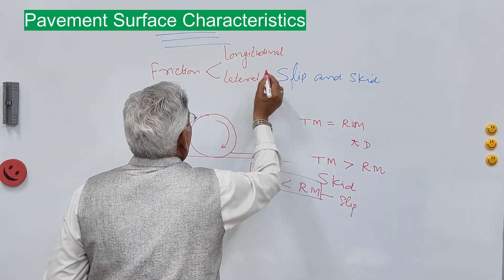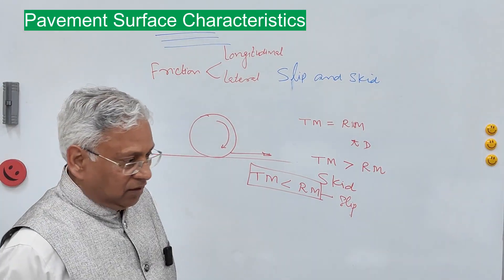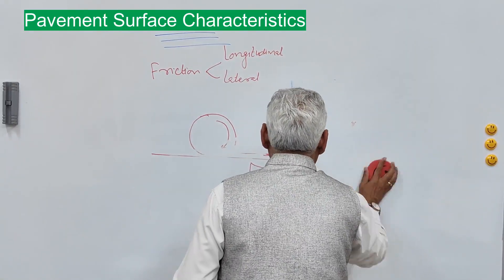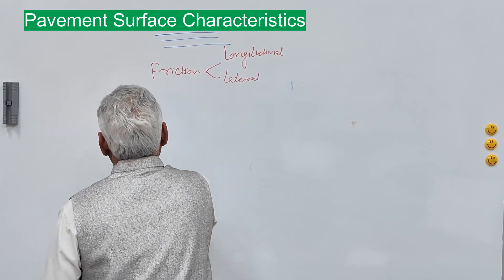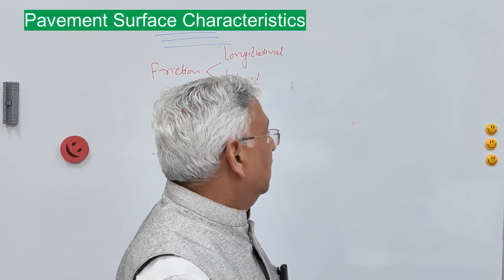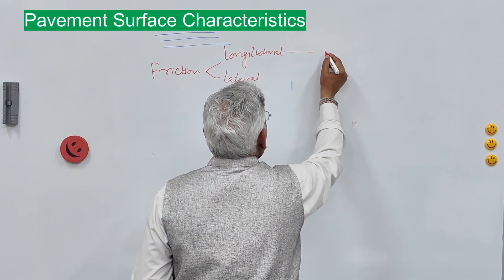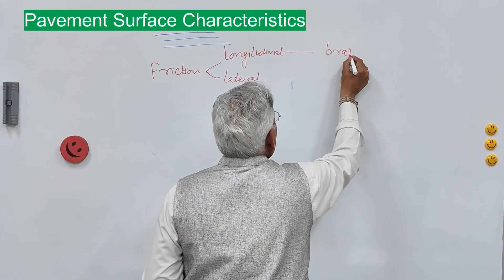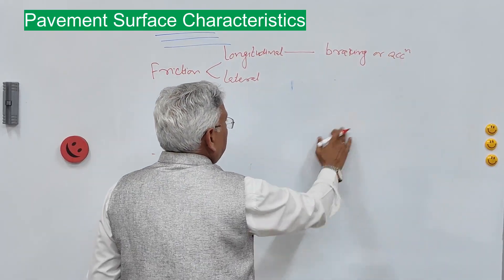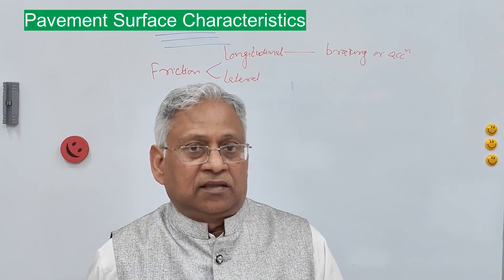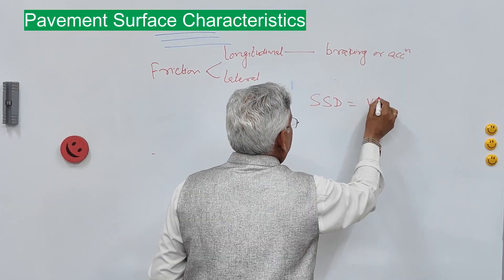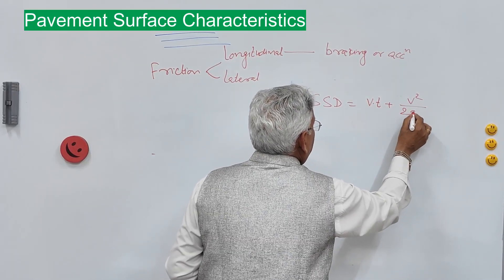Longitudinal friction comes into play when you apply brakes on a normal road or when you accelerate the vehicle on a straight highway — that is, during braking or accelerating. This is important to decide the stopping sight distance (SSD). The equation for SSD is: SSD = v × t + v² / (2gf).